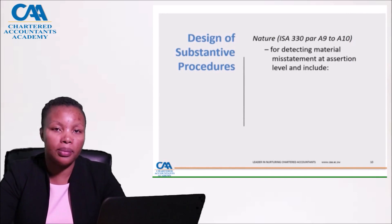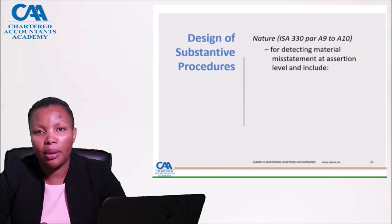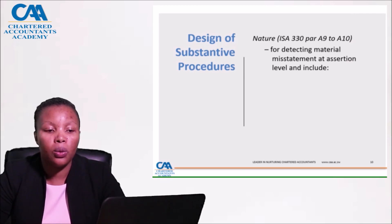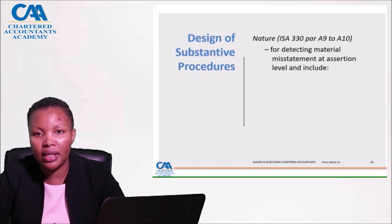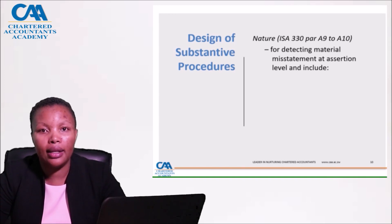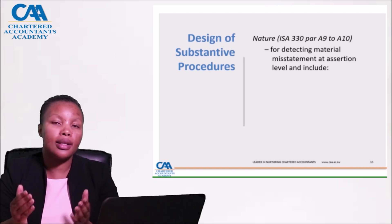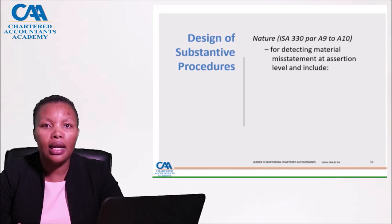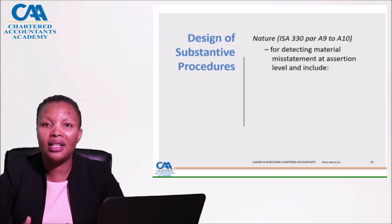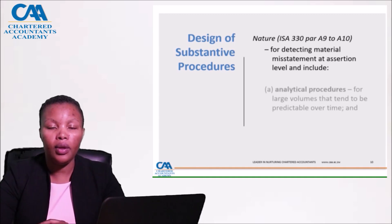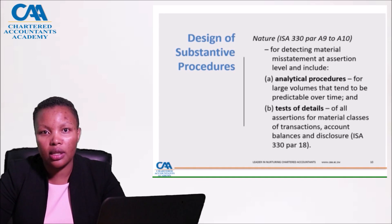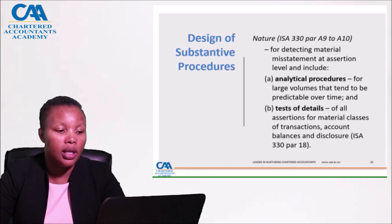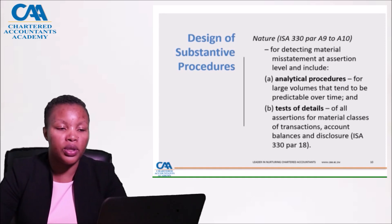Let's see how we design our substantive procedures. We talked about nature — meaning what type of procedure will we use to detect material misstatements at assertion level. It could be analytical procedures or test of details. Analytical procedures tend to be used when we've got voluminous transactions with large volumes and predictable patterns or expected trends over time. Tests of detail are used for all assertions for material classes of transactions and account balances.